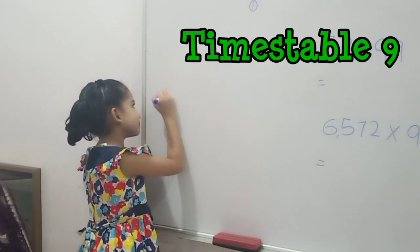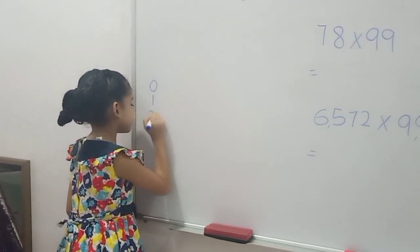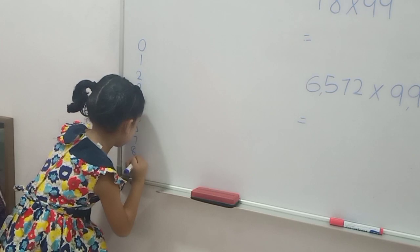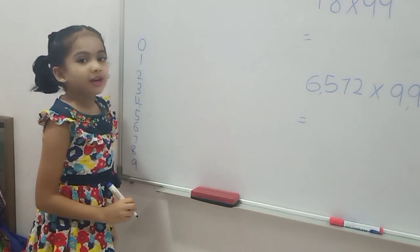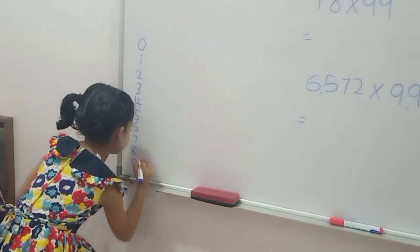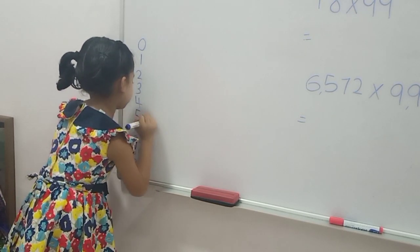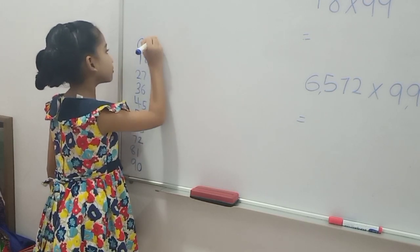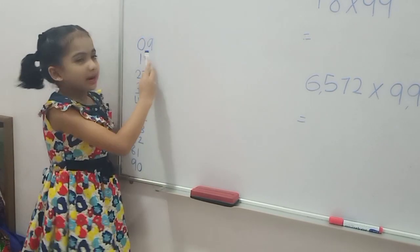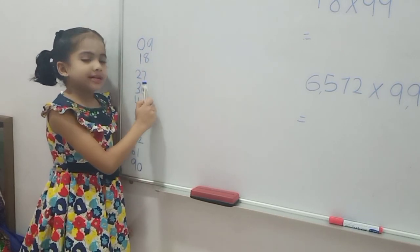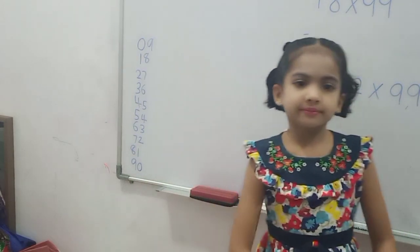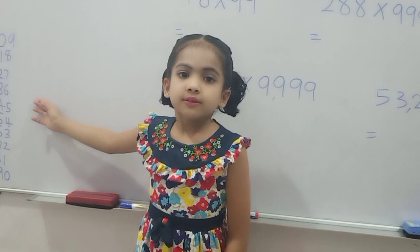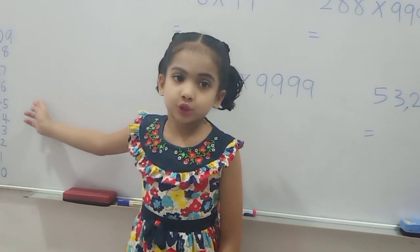0 times 9. 1 times 9 is 9, 2 times 9 is 18, 3 times 9 is 27 and etc. This is single digit. This trick is for single digit 9.